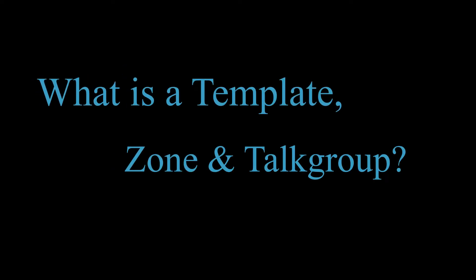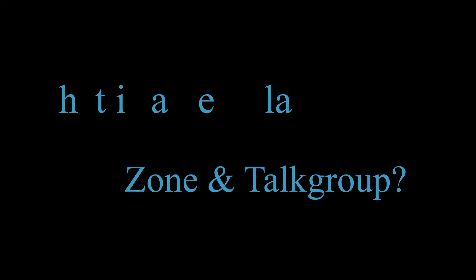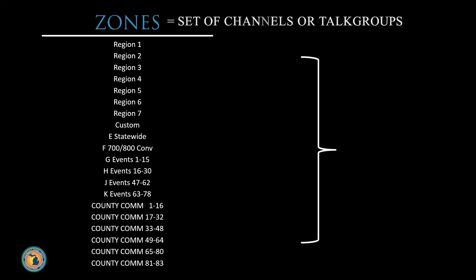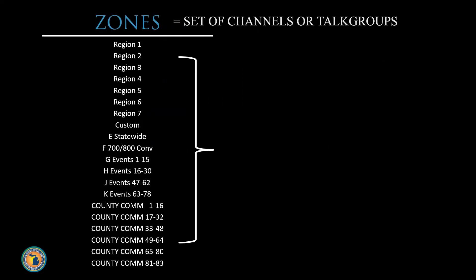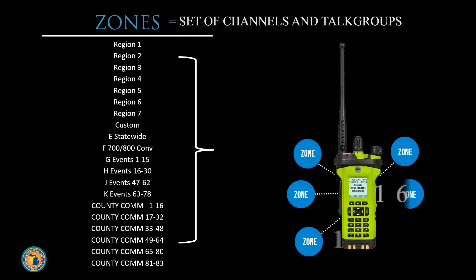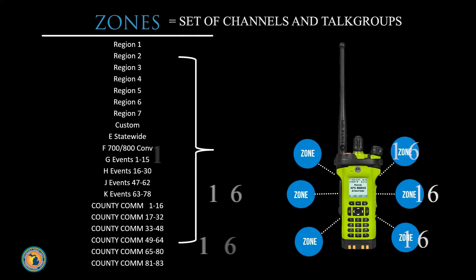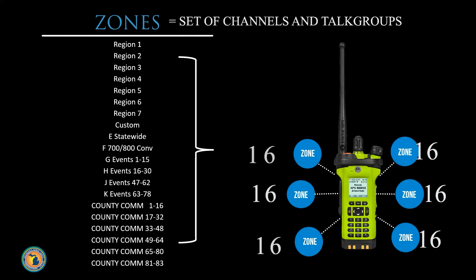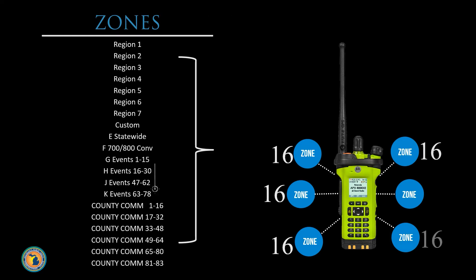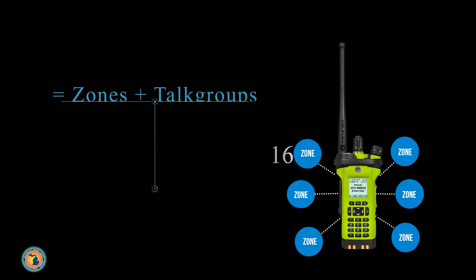What is a template, zone, and talk group? A zone is a set of channels or talk groups. Each radio is programmed with multiple zones, and each zone can hold up to 16 talk groups or channels.